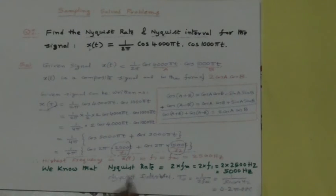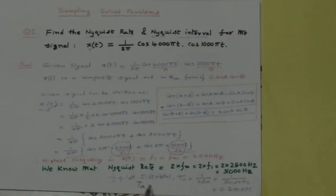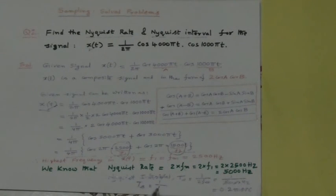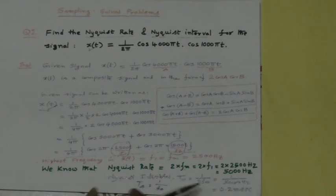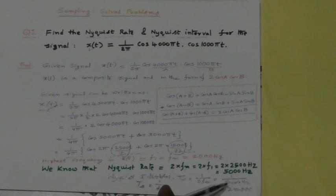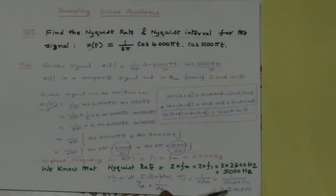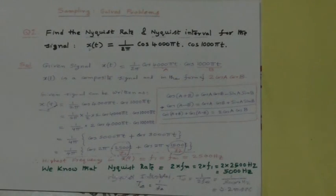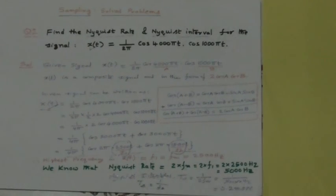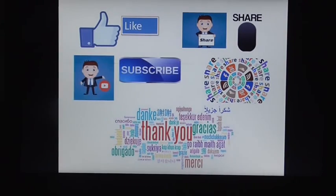The Nyquist interval Ts is equal to 1 over 2Fm, which is 1 over 5000 Hz, giving Ts = 0.2 milliseconds. Thank you very much.